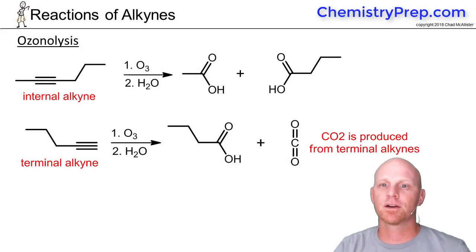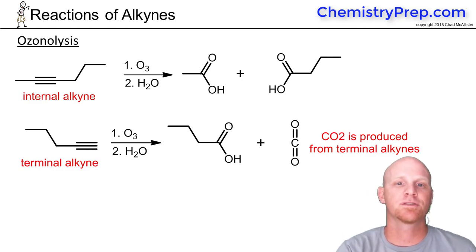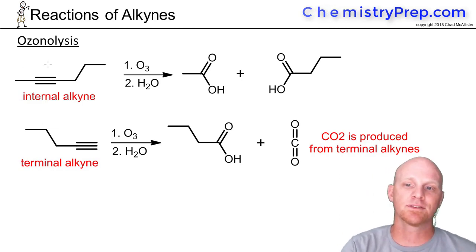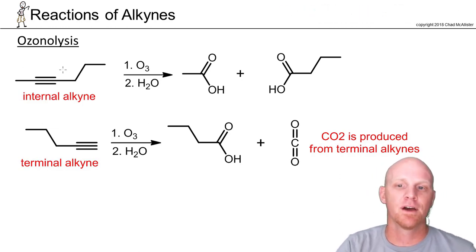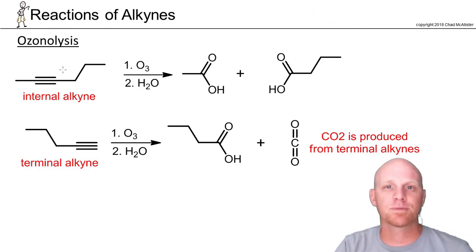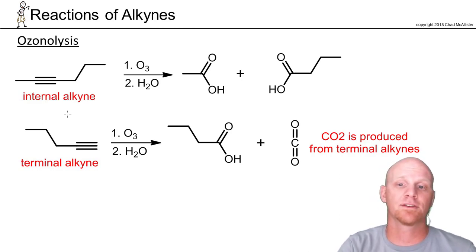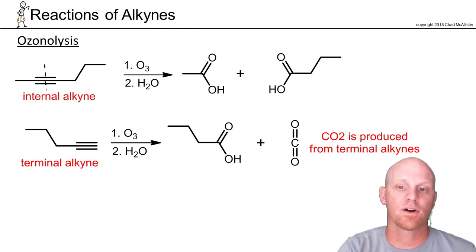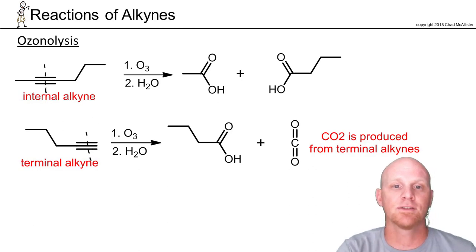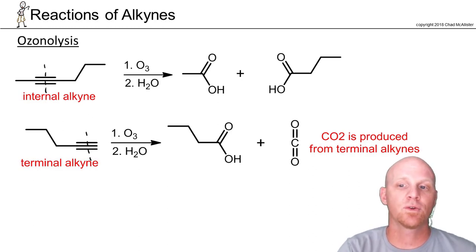One of the last reactions we'll look at here with alkynes is ozonolysis. We saw ozonolysis with alkenes and it's going to be a similar process here. With alkenes we have the option of either oxidizing or reducing conditions. With alkynes it's always going to be oxidizing conditions, and we're going to cleave the carbon-carbon triple bond — both for internal alkynes and terminal alkynes — and generally we'll form carboxylic acids on both sides.